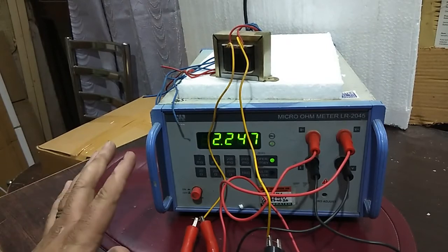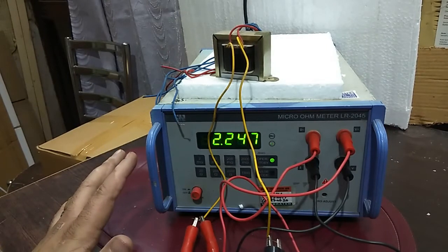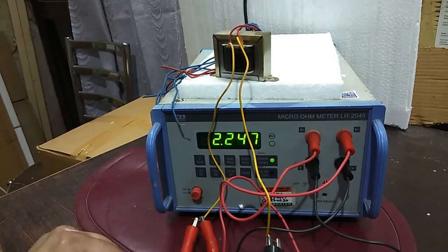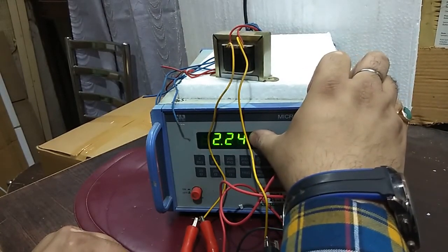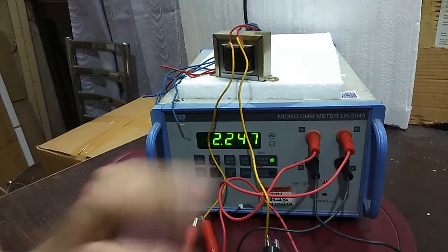You're getting four and a half digit accuracy. If you have a three and a half digit instrument, then the result will show 2.24 only, not seven.